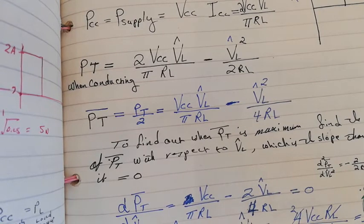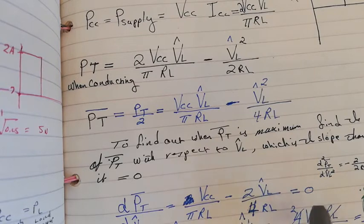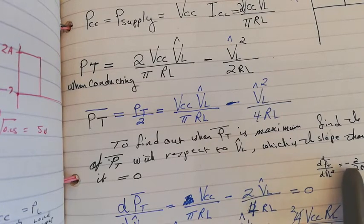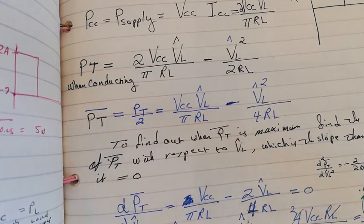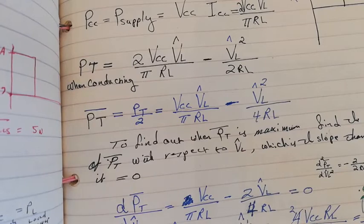Taking the second derivative confirms it is negative, indicating we are at a maximum point. The maximum power condition is V_L_peak = 2/π × VCC.